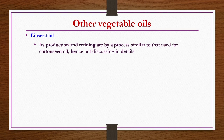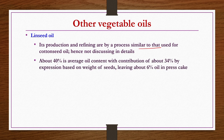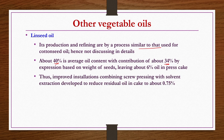Linseed oil production and refining follow a process similar to that used for cotton seeds. The average oil content is about 40 percent, with expression contributing about 34 percent by weight of seeds, leaving about 6 percent oil in the press cake. Improved installations combining screw pressing with solvent extraction reduce residual oil in the cake to about 0.75 percent. Since the process is similar to cotton seed, it is not discussed in detail again.